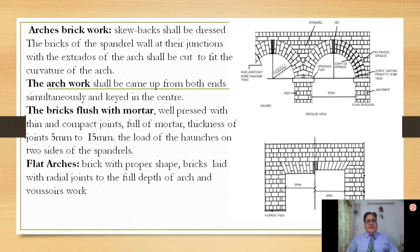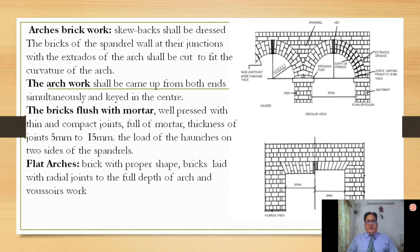As shown in the figure and the notes, skew backs shall be dressed. The bricks of the spandrel wall at their junctions with the extrados and arch shall be cut to fit the curvature. While constructing arch work, we should not start from the top — we should start from the two ends, supported in between with formwork, and come up at the center where it should be keyed. There are certain keys provided as joints from either side of construction, and the joint should be flushed. There can be circular arches or flat arches, and the selection depends on the span of the brick work.